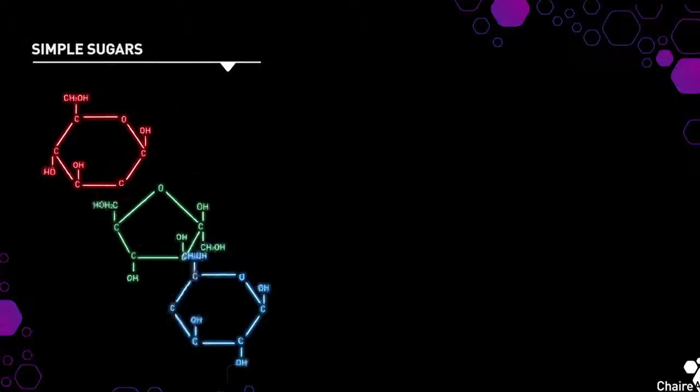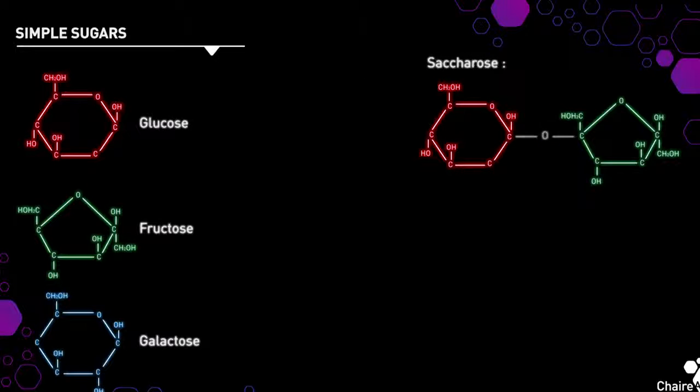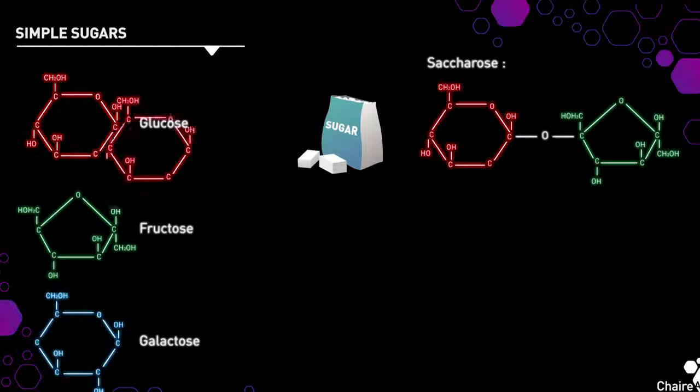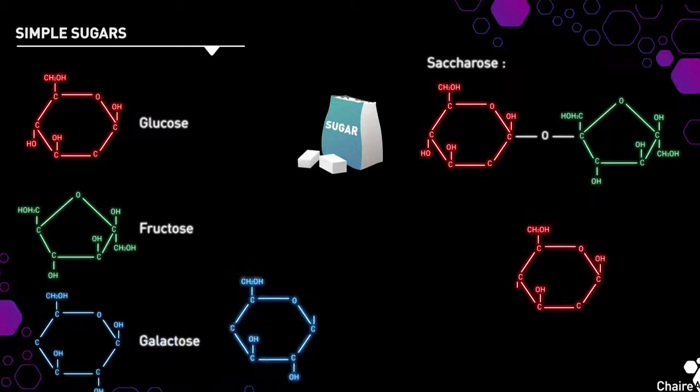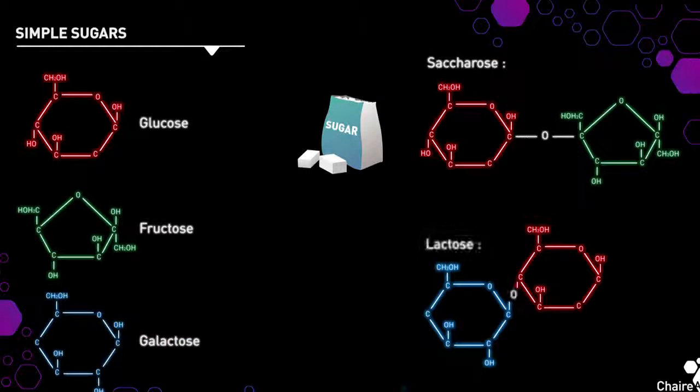These are carbohydrates that can be linked to each other to form small saccharides. For example, when glucose is linked to fructose to form saccharose, which we normally call sugar, and when glucose is linked to galactose to form lactose, the sugar in milk.